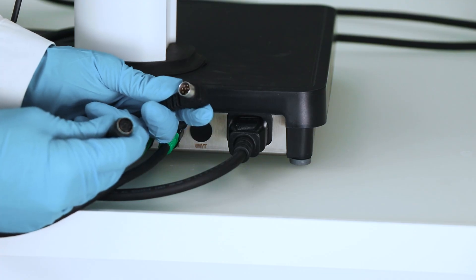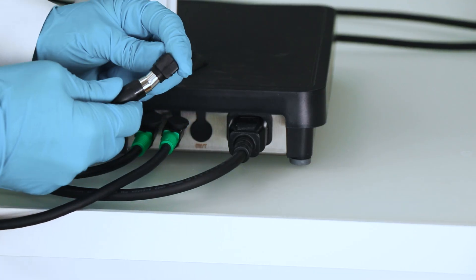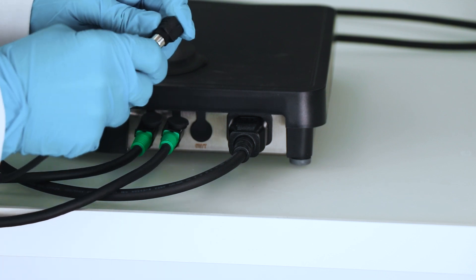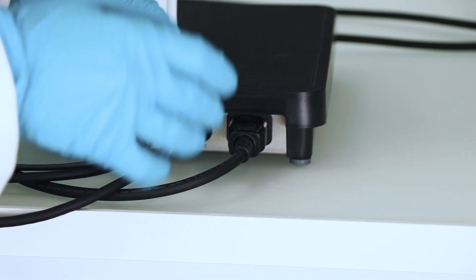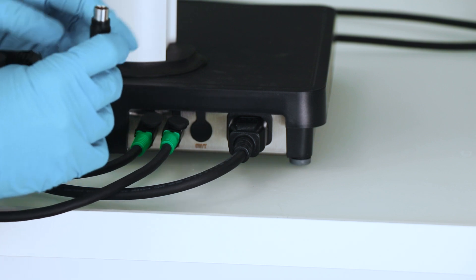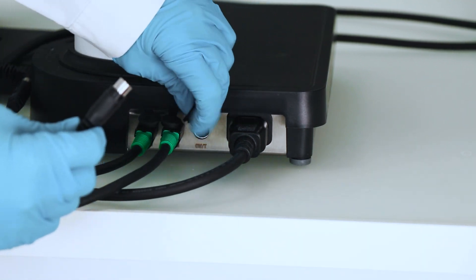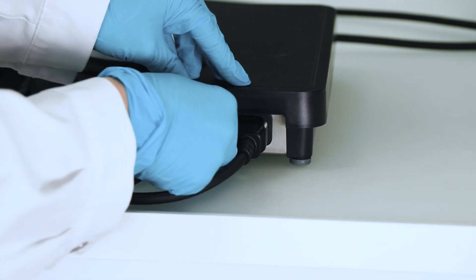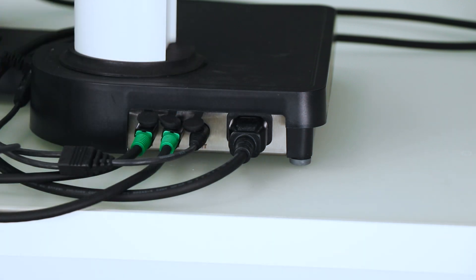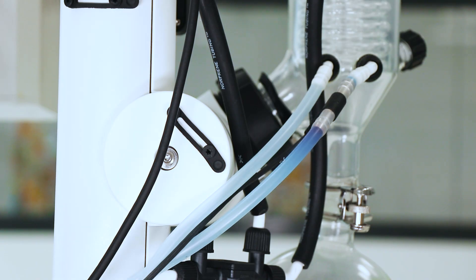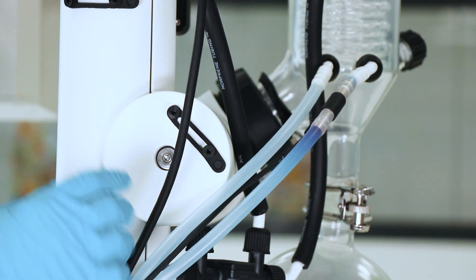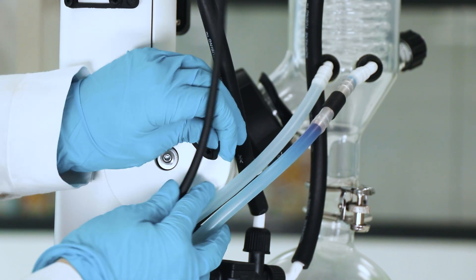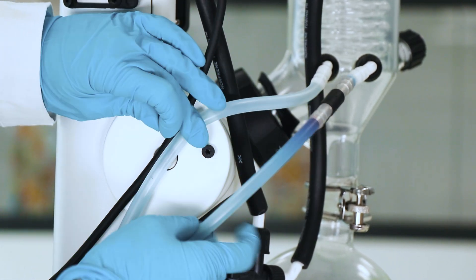So then you connect the water valve to the water sensor. And you plug in the cooling water sensor to the rota vapor here where it says CWT. And now you can organize all your tubes with the tube holders here. So just connect them here.